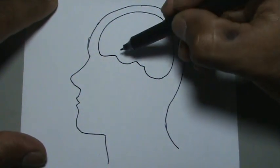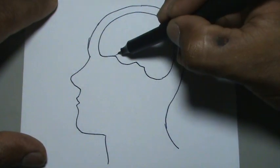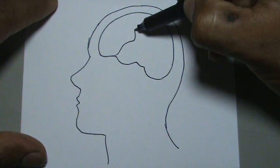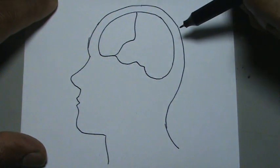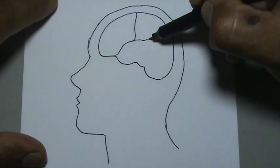Hacemos estas curvitas así, vamos a dividirlo en partes, viene una parte aquí, este sería un bloque, una sección por decirlo así.